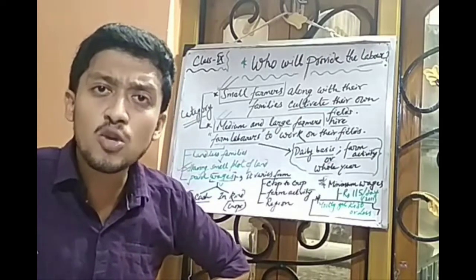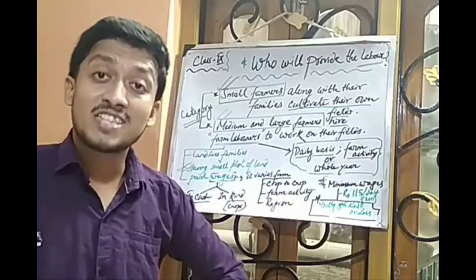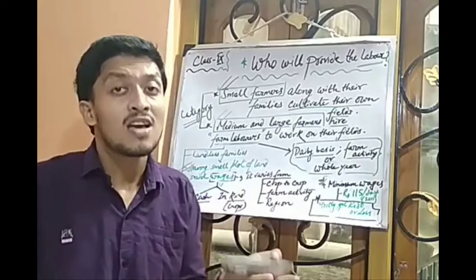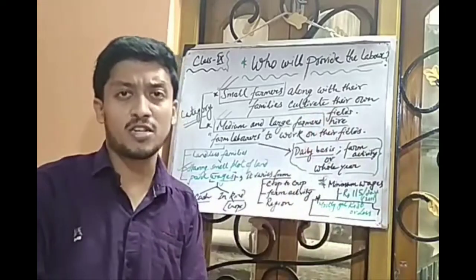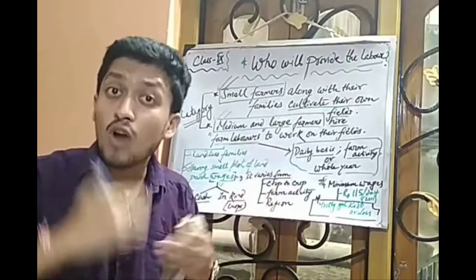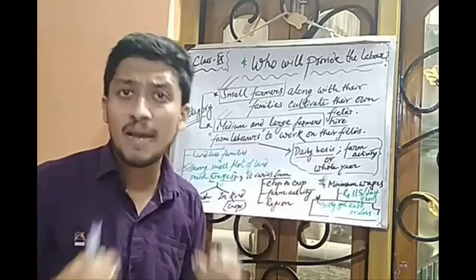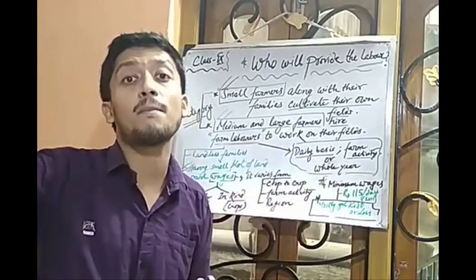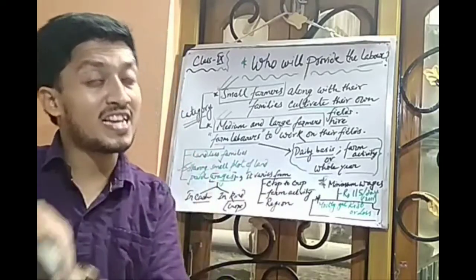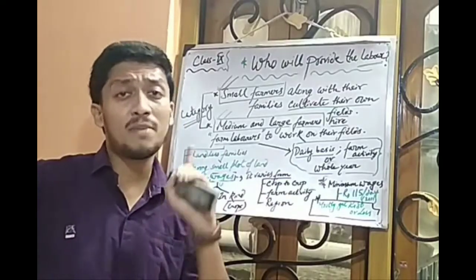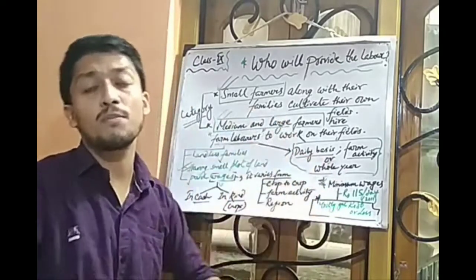Why are farm labourers ready to work below the minimum wage? In Palampur, most farmers are poor Dalit farmers who do not have land of their own. There is tough competition — the population is increasing and many people are willing to work in the field even at lower wages. If one person won't work at 150 rupees, another is ready at 100 rupees. This is why farm labourers are exploited, and this situation is common throughout India — despite minimum wage declarations, labourers are exploited by large and medium scale farmers.